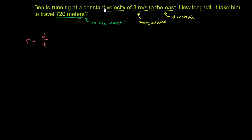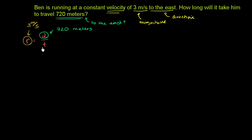In this problem, they're giving us the rate — 3 meters per second. They're also giving us the distance — 720 meters — and they want us to figure out the time. So we have: 3 meters per second is equal to 720 meters over some change in time.